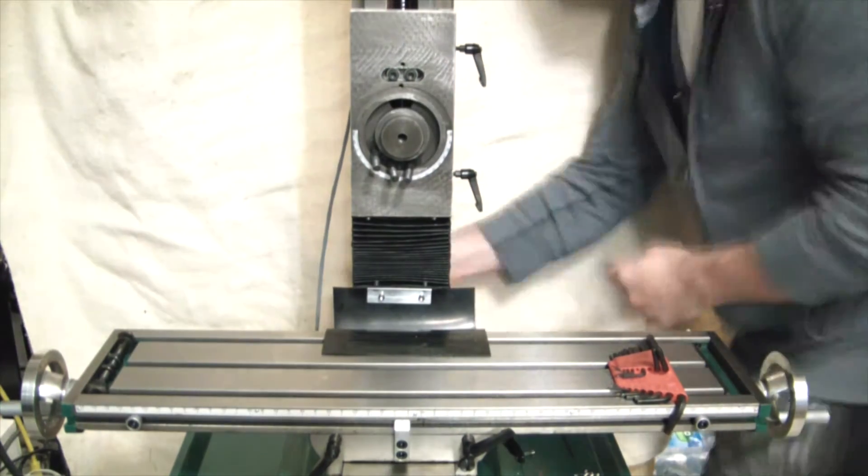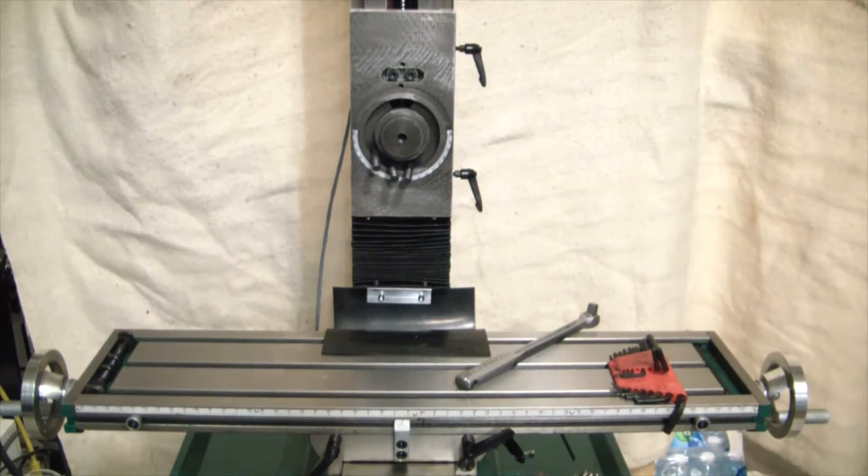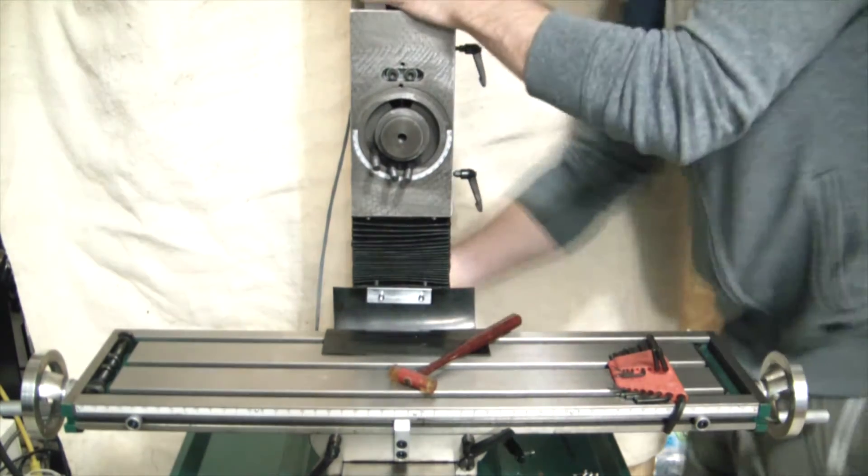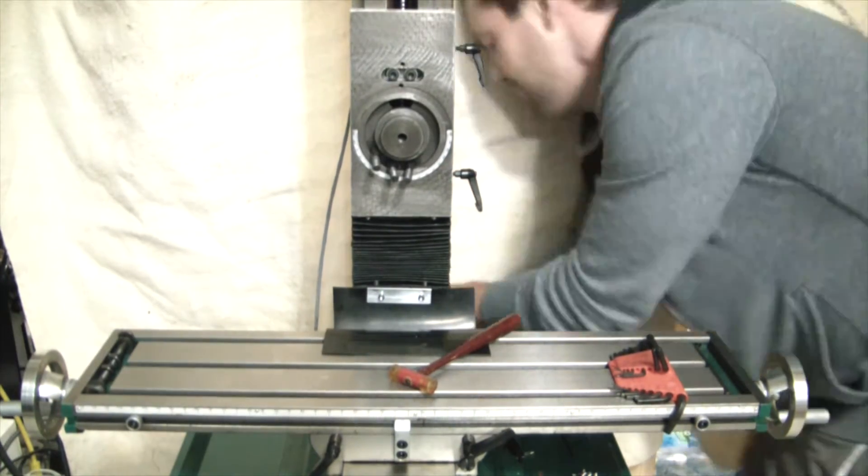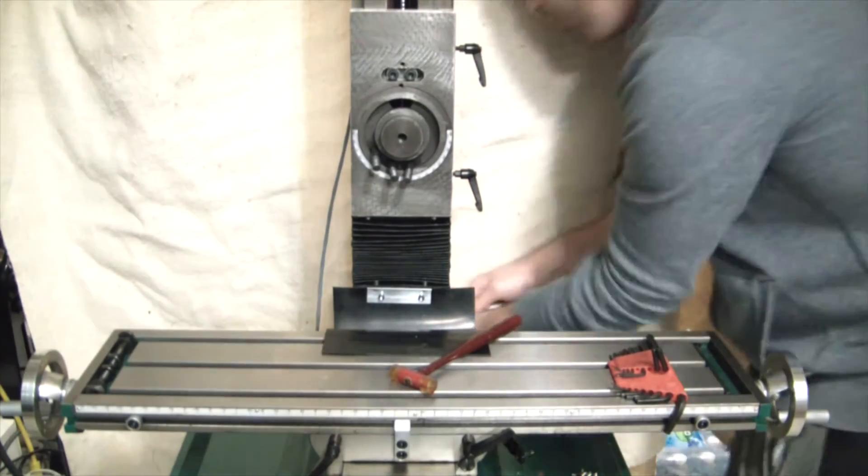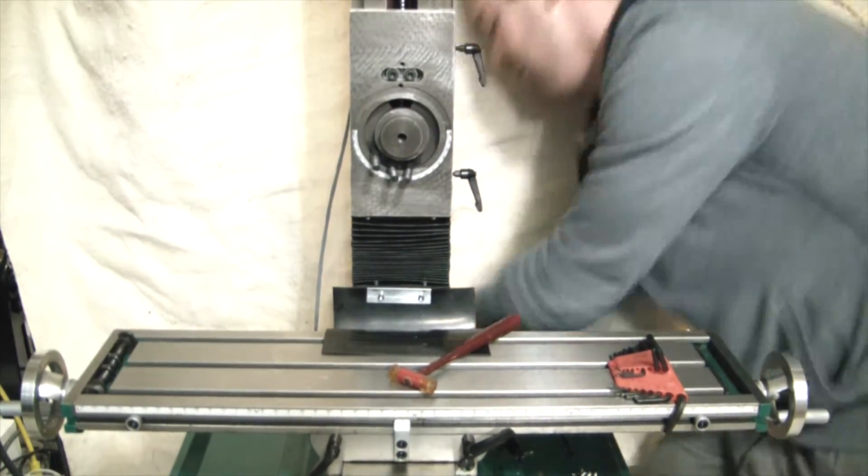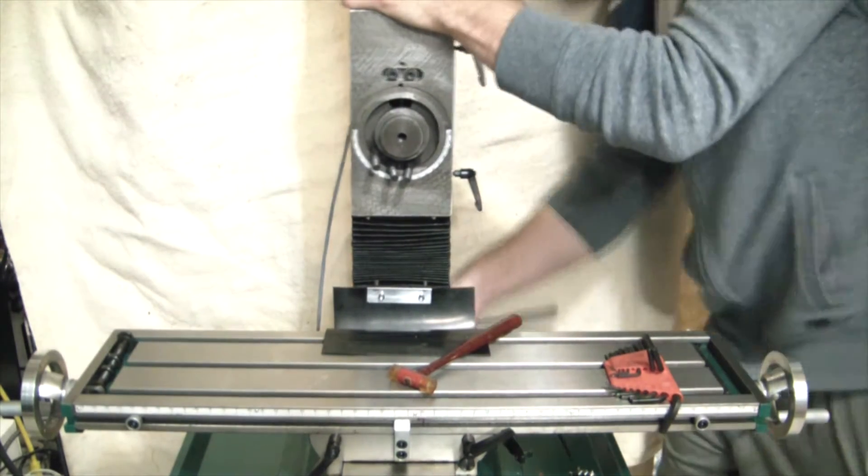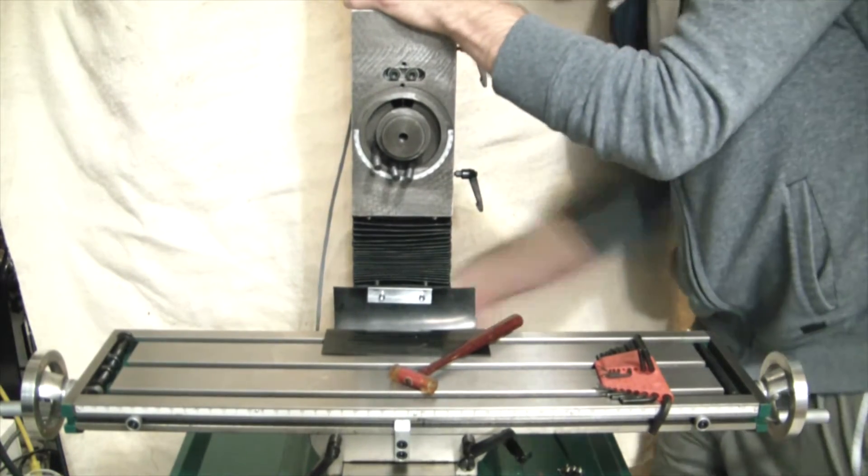Moving on, the removal of the column is something you probably don't have to do if you don't plan on clearancing or extending the base slot. I wanted to maintain that full seven inches of Y-travel though, so in my opinion it was worth it to just remove the column. Later on in the video you'll see that I made an additional 1.75 inch extension to that base slot towards the front of the mill.